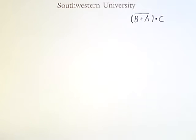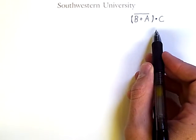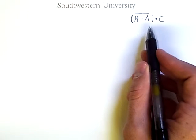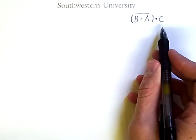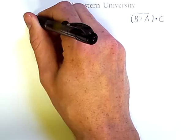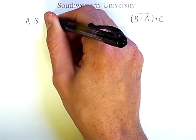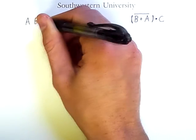This video will demonstrate how to construct a truth table for a compound Boolean expression. Notice that this expression has three distinct variables. That means we need to consider all possible assignments of zeros and ones to these three variables.